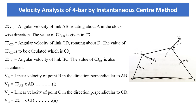Let omega_AB be the angular velocity of link AB rotating about A in the clockwise direction; its value is given as omega_1. Omega_CD is the angular velocity of link CD rotating about D; its value, omega_2, is to be calculated. Omega_BC is the angular velocity of link BC, and its value is also to be calculated.